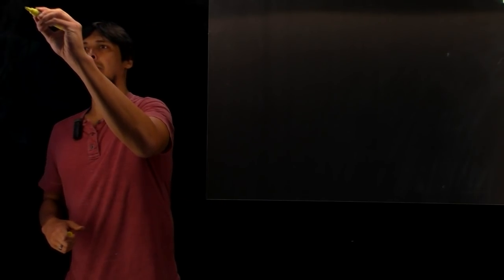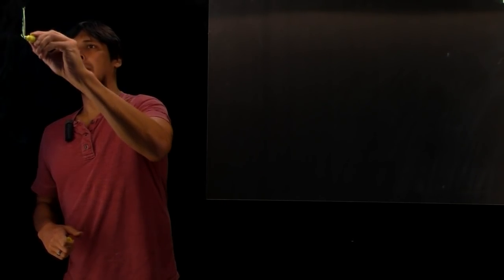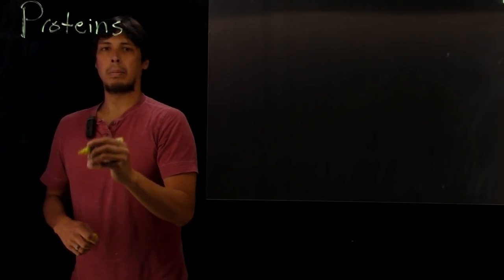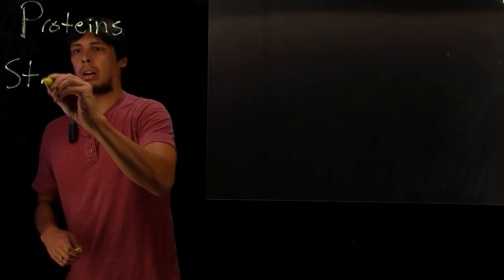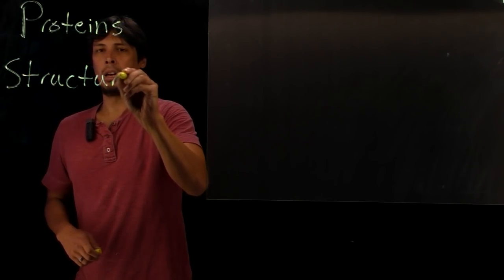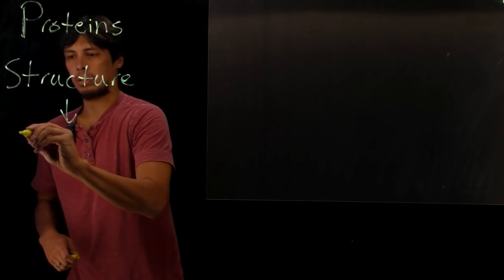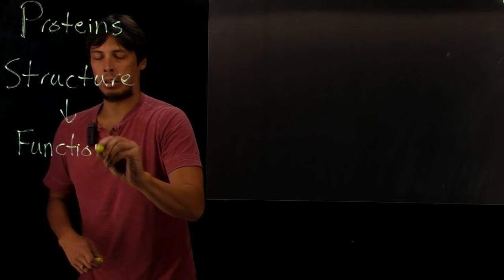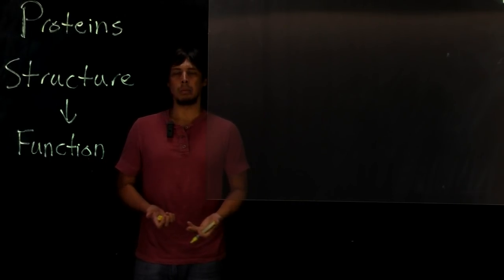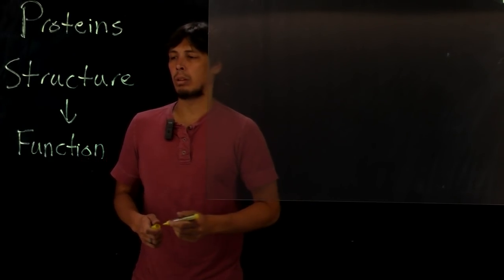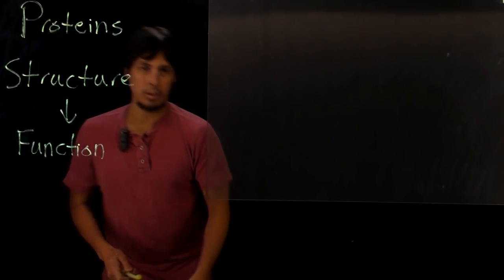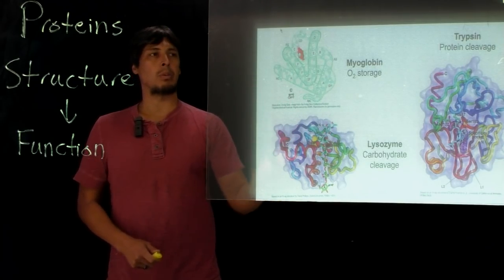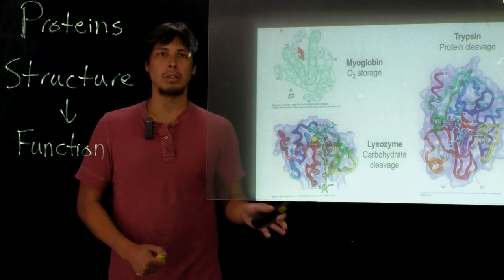The first macromolecular structure we're going to look at based on our conversation of amino acids is proteins. And from here we can really start to think about how structure defines function, which is a theme throughout biochemistry. If we look at a few structures, what we see here on the right are three different protein structures that all have different functions inside of a cell.